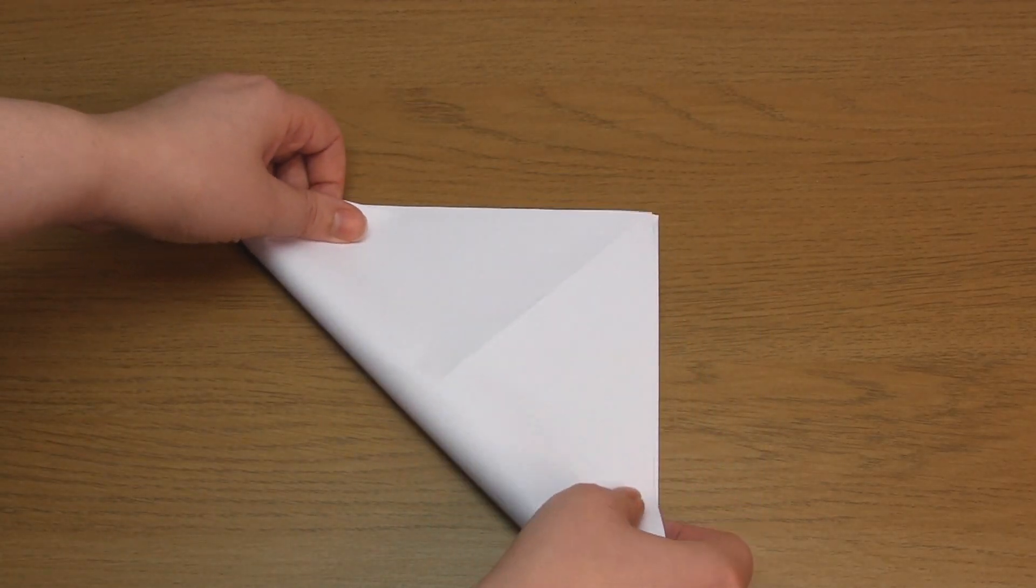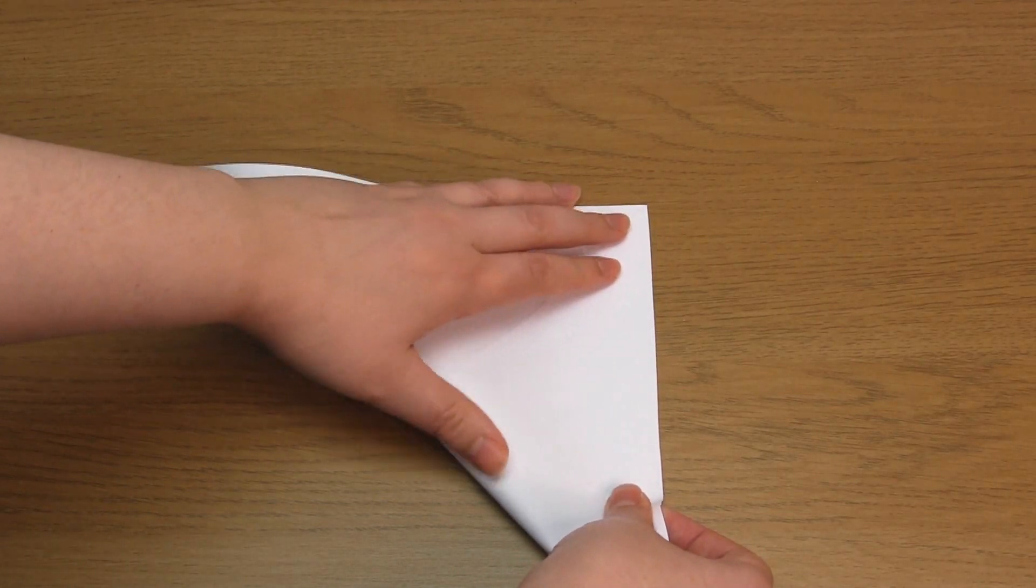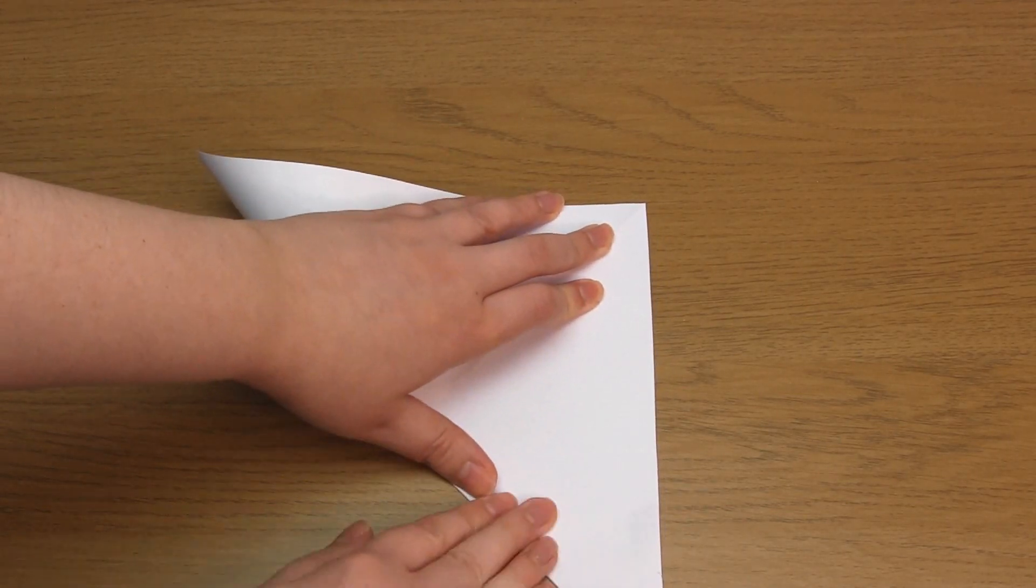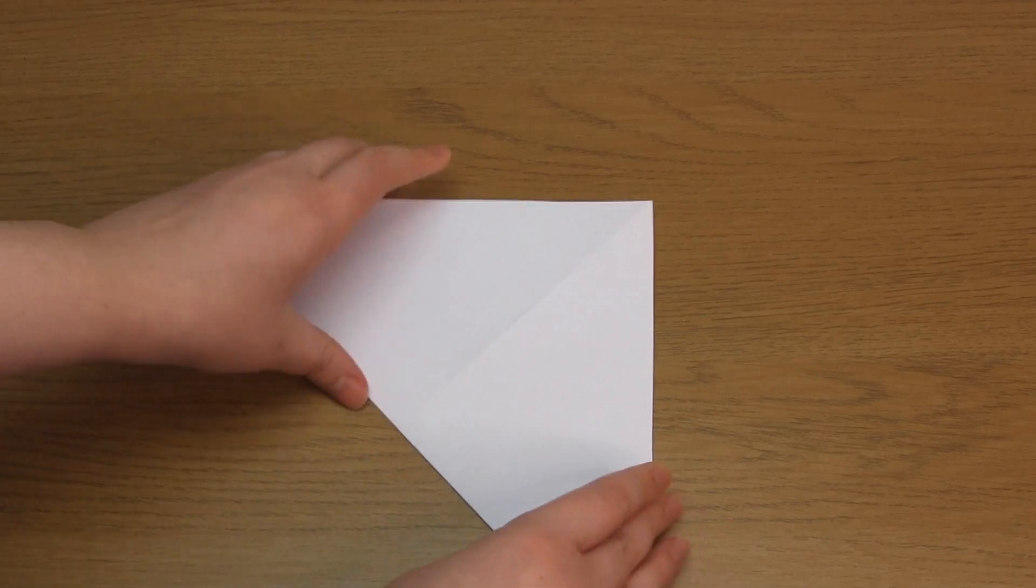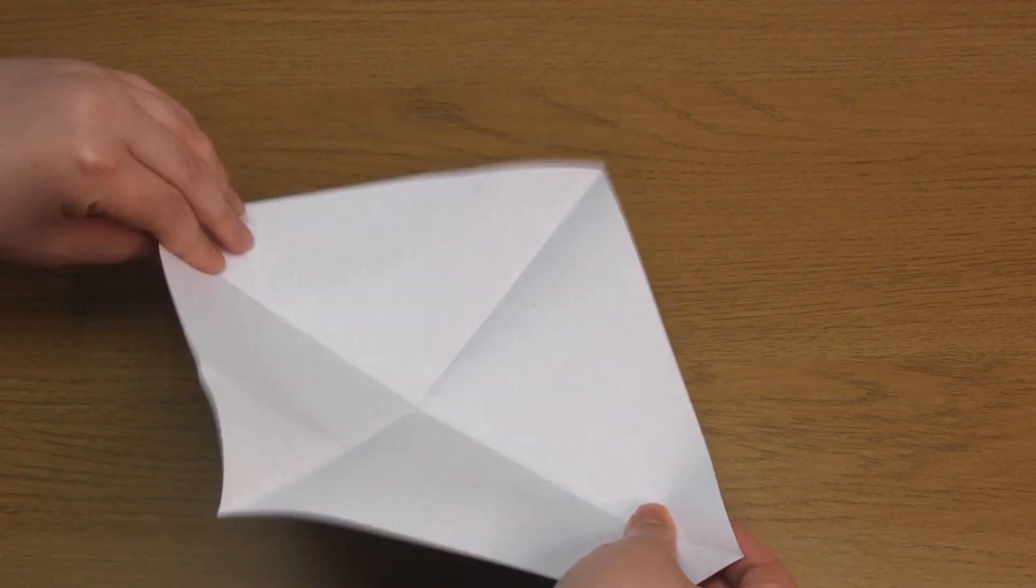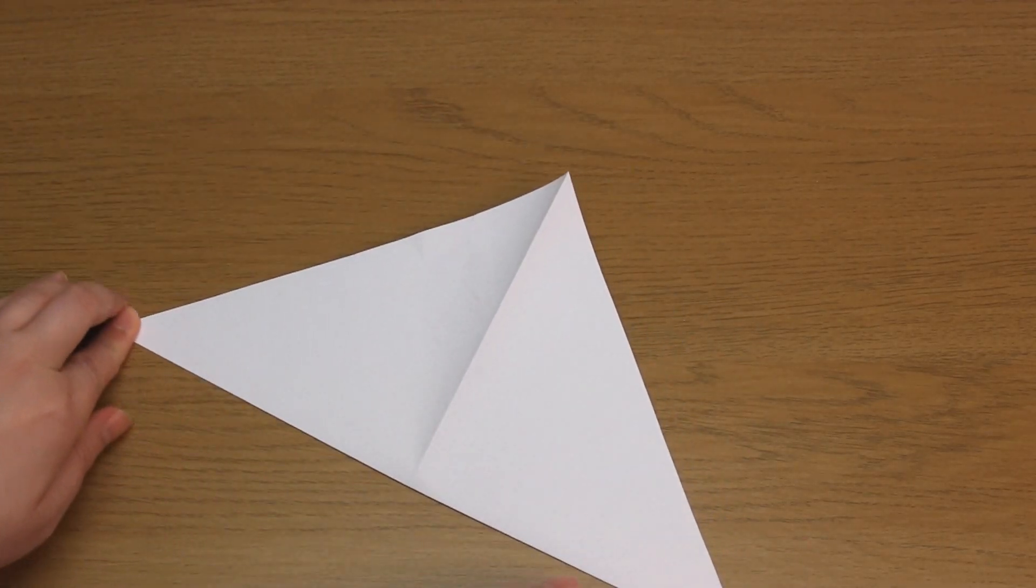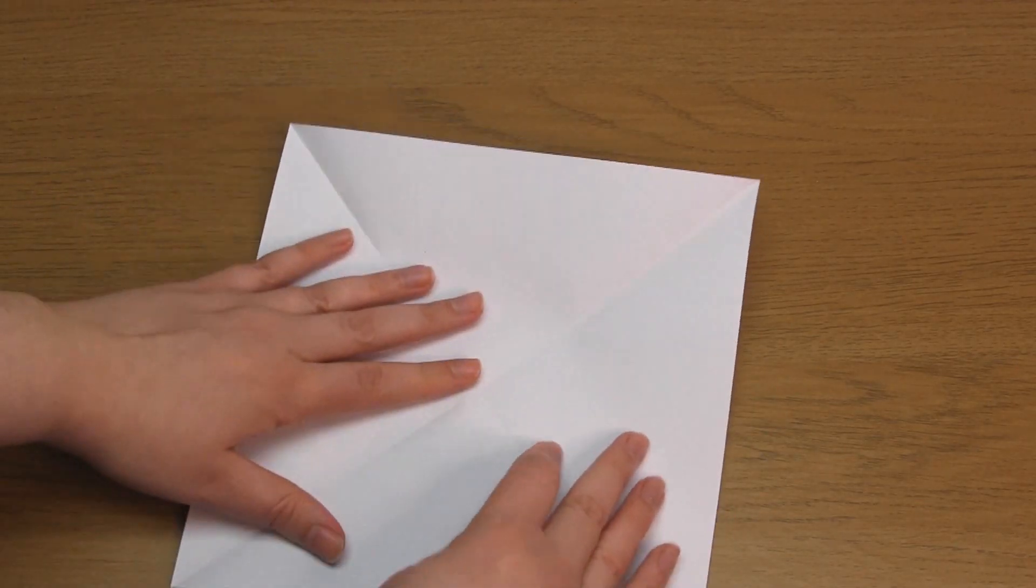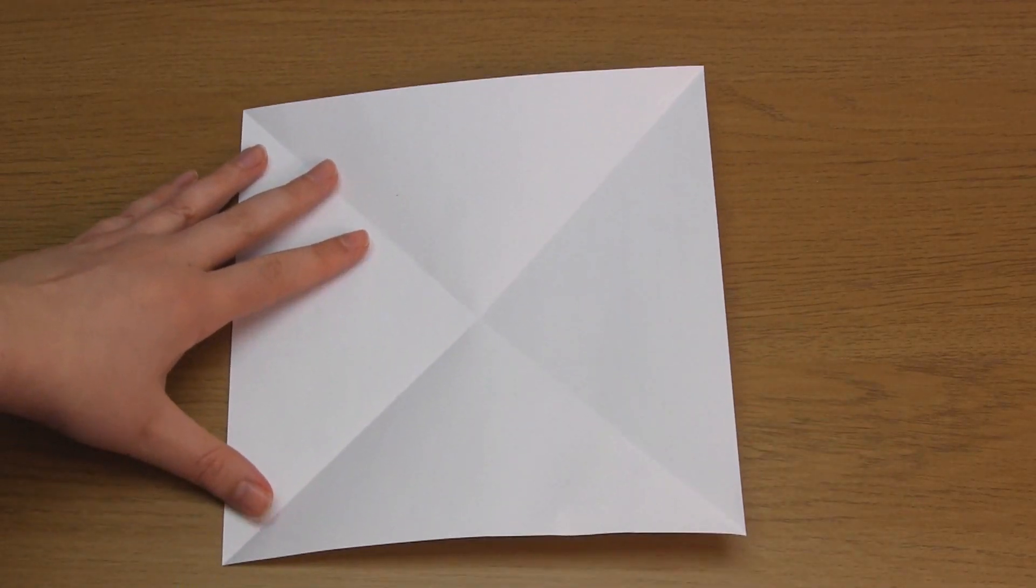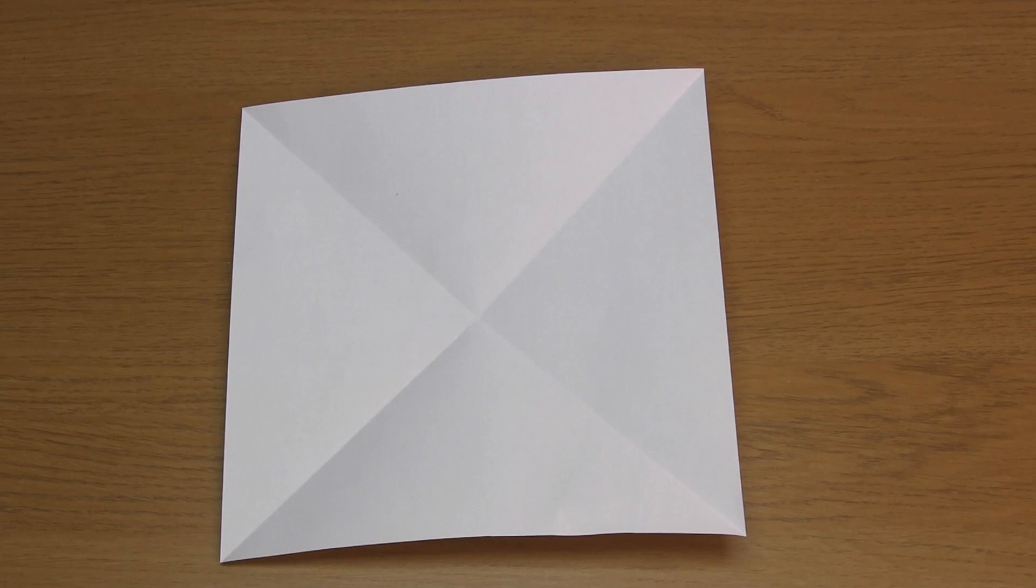Open out the fold and make another diagonal fold by joining together the two corners that aren't yet folded. Make sure you press down on every fold to make them nice and crisp. Open out the fold and you should have a square with two diagonal valley folds that splits the paper into four triangles.